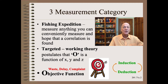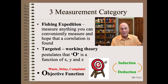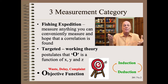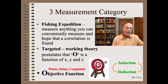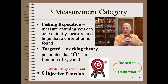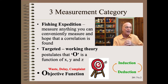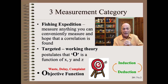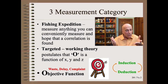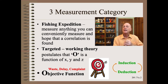Recall from the last clip where we listed three types of measurement categories. The least useful was the fishing expedition, where one measures anything and everything convenient in the hopes that some correlation is found. The statistical sin here may be p-hacking, which we will cover in the next clip. Next is the target measurement, where one has a working theory — hopefully solidly based on science or experience — stating that O is a function of X, Y, and Z, all of which we will measure in our trials. The waste, delay, or customer complaint objective function is likely one of the most important measurements you will make, and the subject of this clip is improving its resolution.